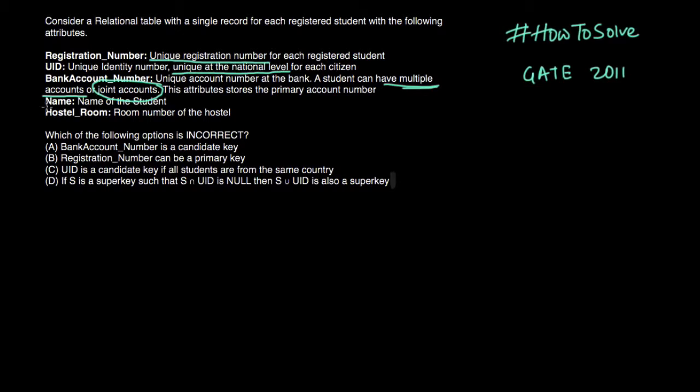Now next attribute is name. So this is name of student and obviously name can repeat. So it will not be unique. Now hostel room. So in hostel we have room number of the hostel. So room number will be stored and there is no more information given here.